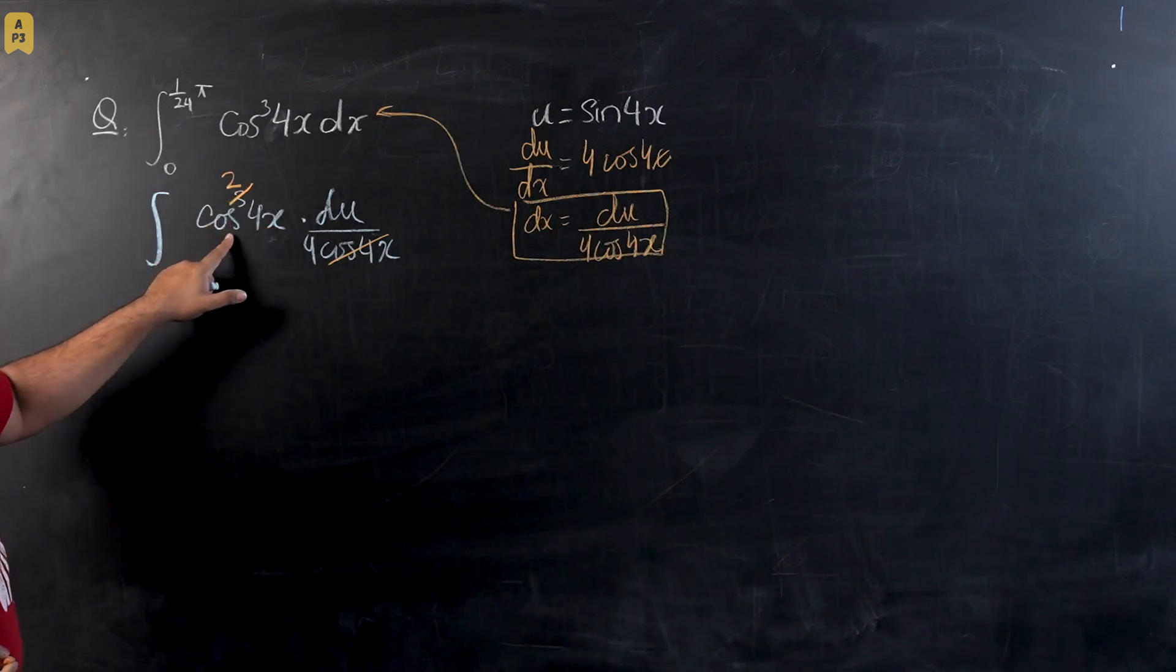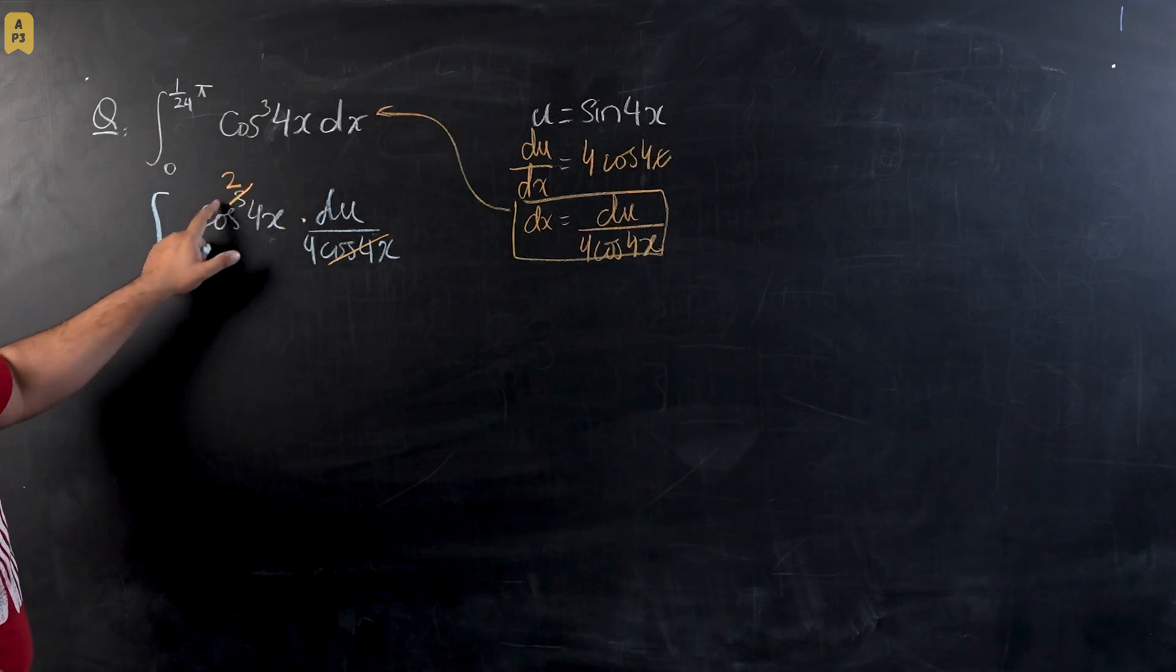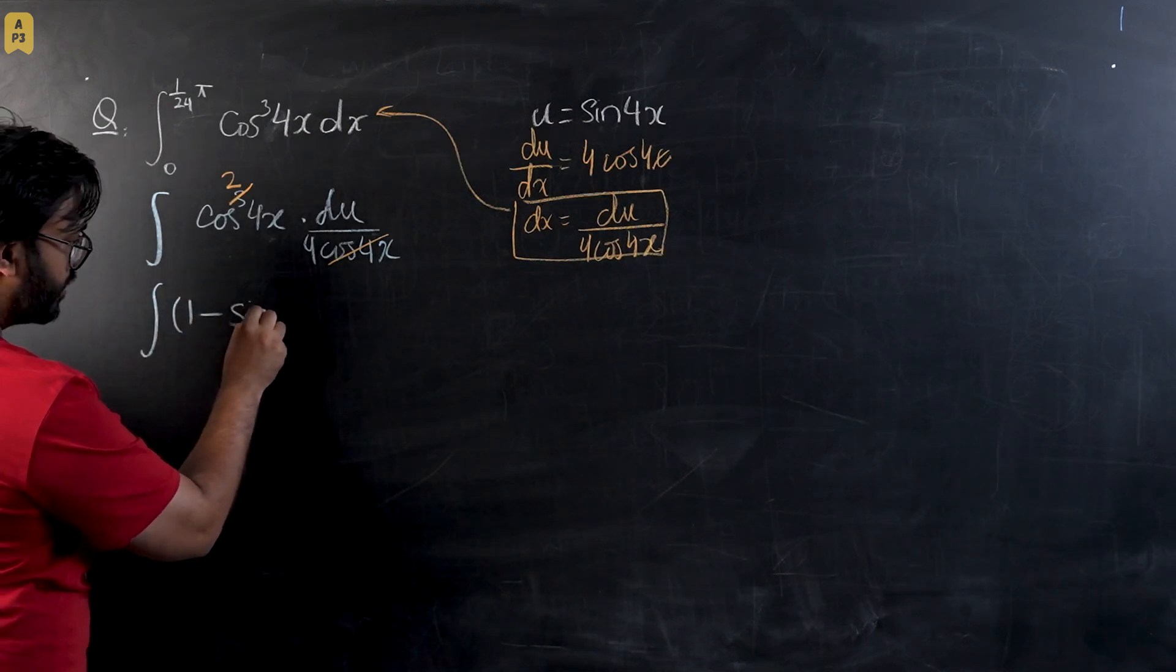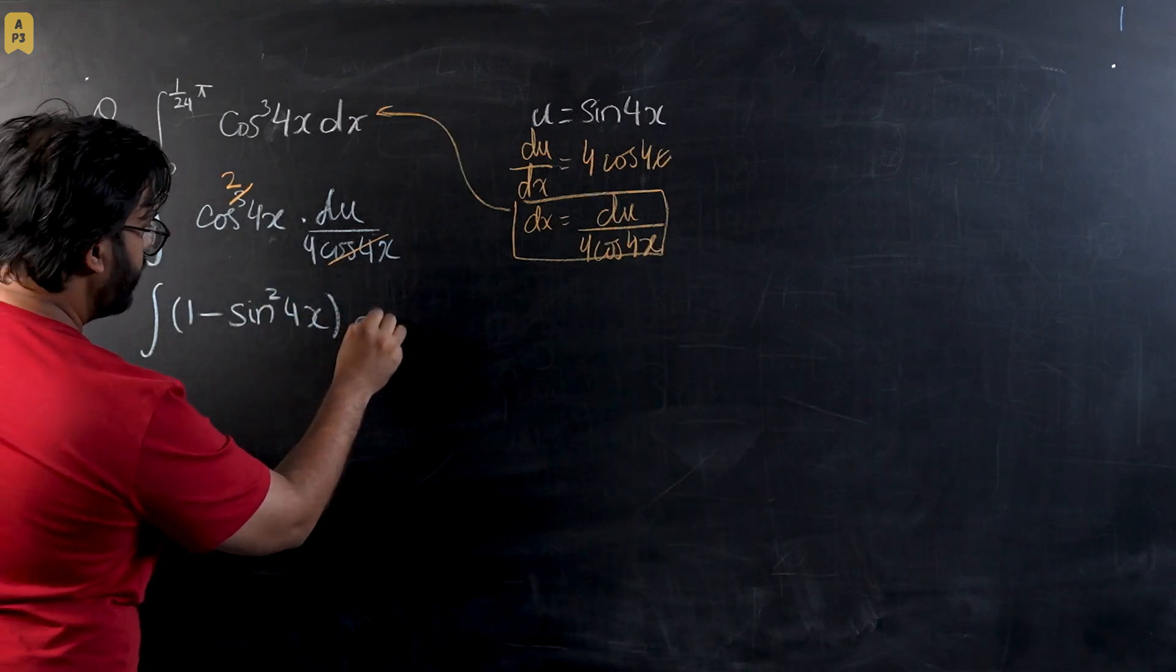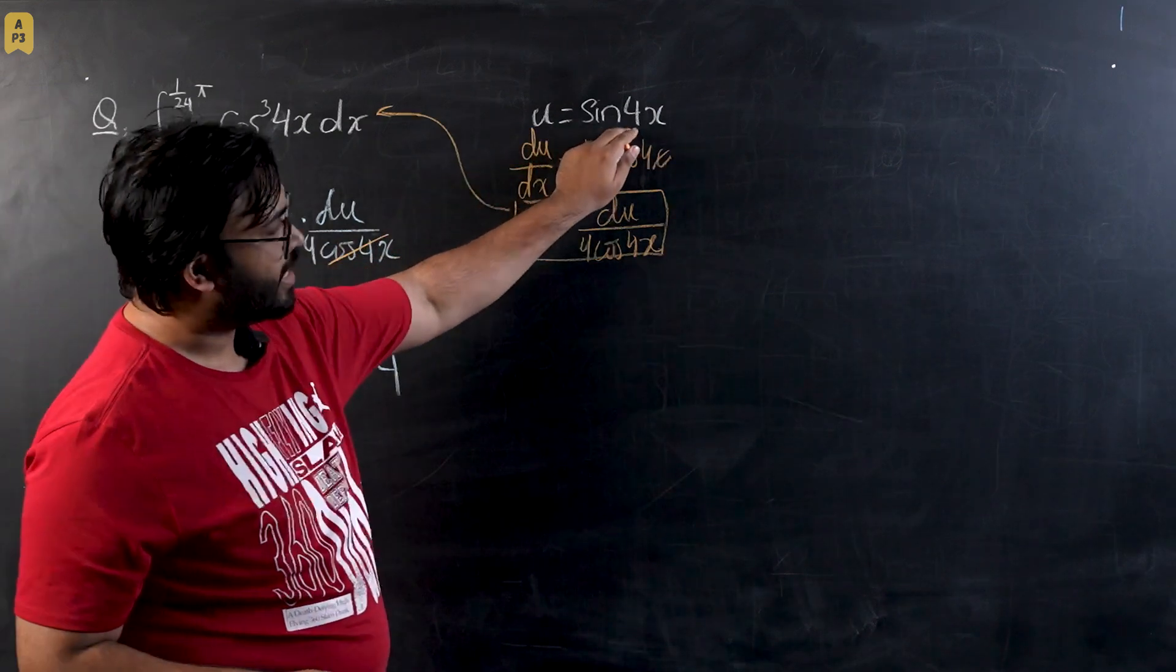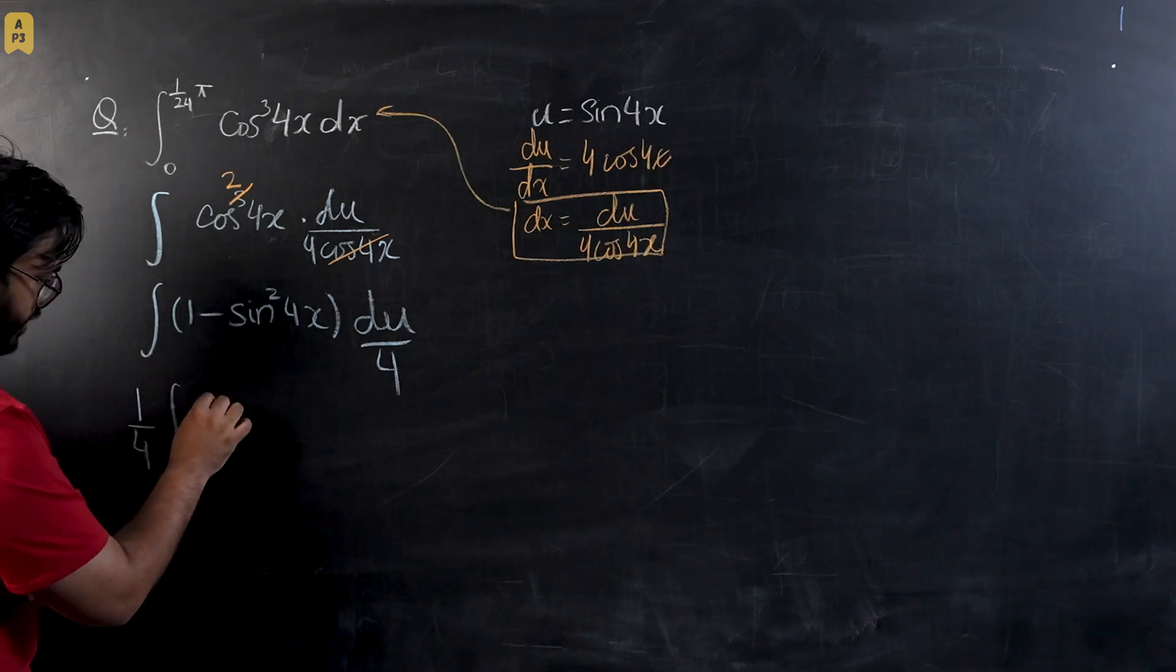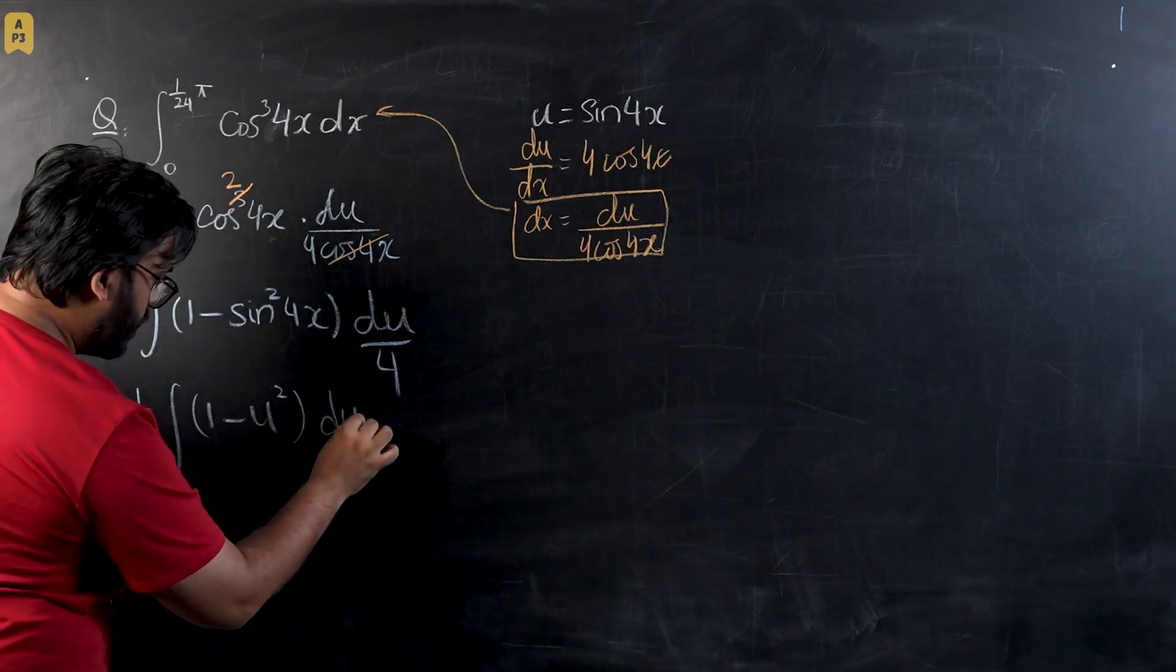The way to do that is I'm going to use the identity sin² + cos² = 1. So if this is cos² 4x, I know that I can write it as 1 - sin² 4x times du divided by 4. Now we can see that sin 4x can be written as u, so this will be, if I take 1/4 common outside, this will become (1 - u²) du. This will be the integral and now we see this is a successful substitution.